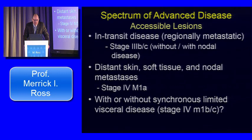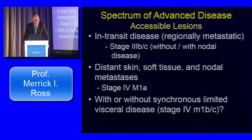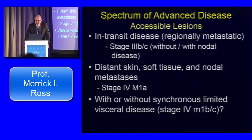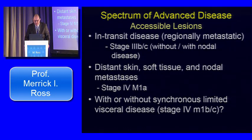As an introduction, we'll talk about the spectrum of advanced disease, specifically pointing out lesions that are accessible to be injected. We're talking about patients with intransit disease, pretty unique for melanoma patients, and regionally metastatic disease defined as stage 3B or 3C depending on nodal involvement. Patients with distant skin, soft tissue, and nodal metastases — stage 4M1A — are accessible for intralesional injections as well, with or without synchronous limited visceral disease.